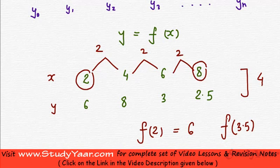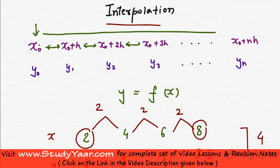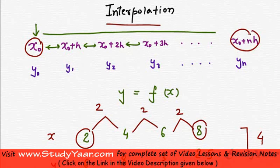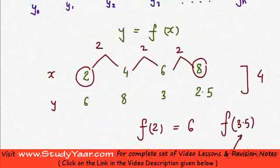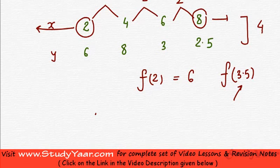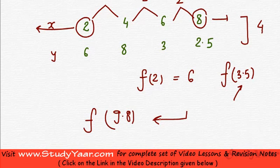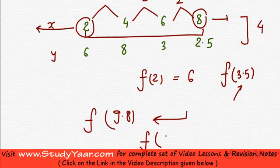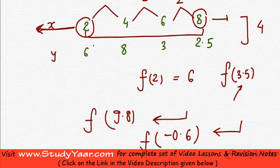Interpolation techniques are used to get values in the range x0 to x0 plus nh. Extrapolation refers to looking at values outside that range. For example, finding f of 9.8 would be an extrapolation task because 9.8 is outside the range between 2 and 8. Similarly, finding f of minus 0.6 is also an extrapolation task because that value is outside the range of 2 and 8.